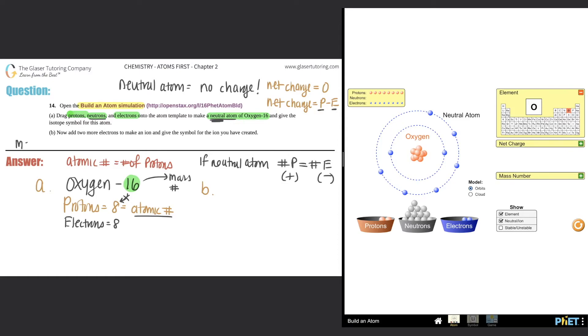What does the mass number always equal? Mass number will always equal the number of protons plus the number of neutrons. If we have a mass number of 16, then 16 equals 8 protons plus 8 neutrons, so we should have eight neutrons. I'm going to drag in eight neutrons: one, two, three, four, five, six, seven, eight. Perfect.